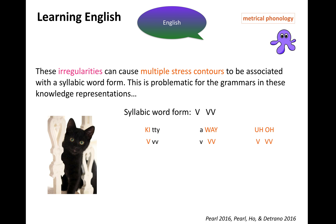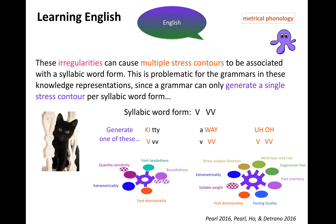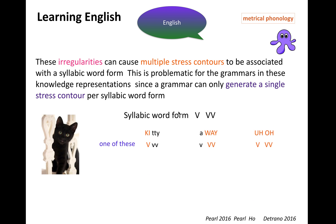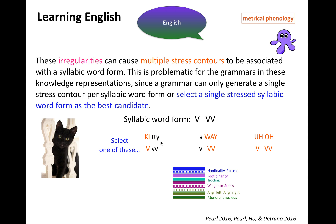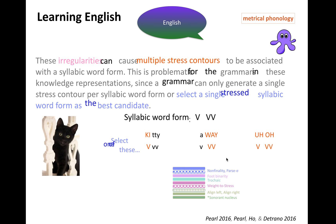This means you can have multiple stress contours associated with a single syllabic word form. For example, a syllabic word form with a short vowel in the first syllable and a long vowel in the second can yield 'kitty,' 'away,' or 'uh-oh' — very different stress contours. This is problematic because a grammar in parametric representations can only generate a single stress contour per form, or in a constraint system select a single stressed word form. You only get to pick one, and that's a problem because there's more than one.